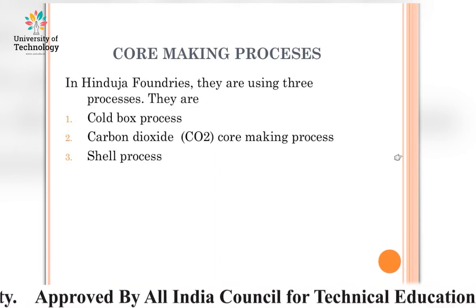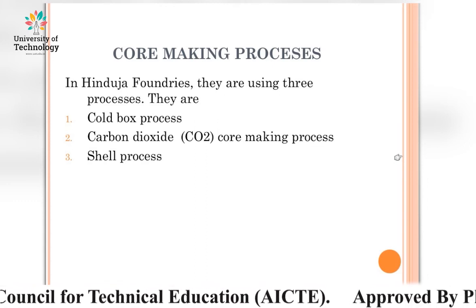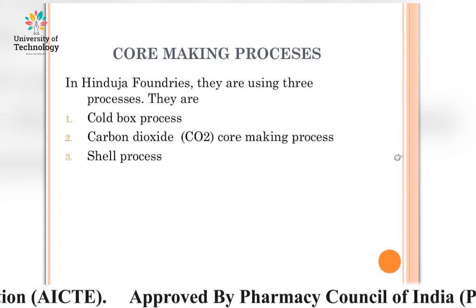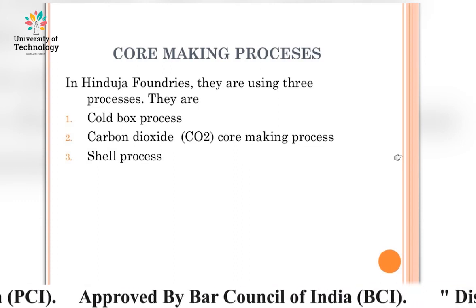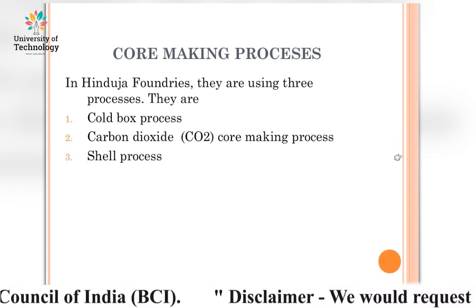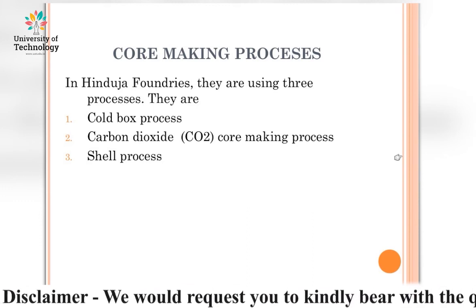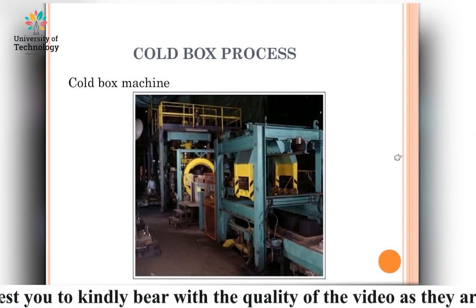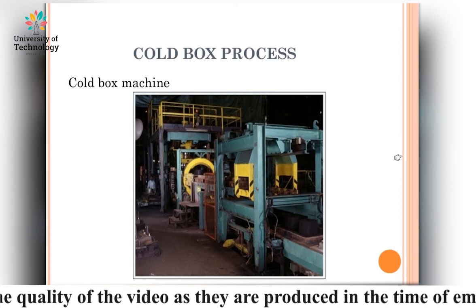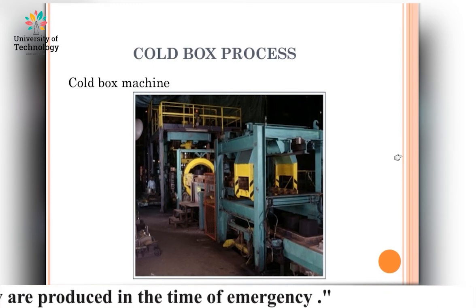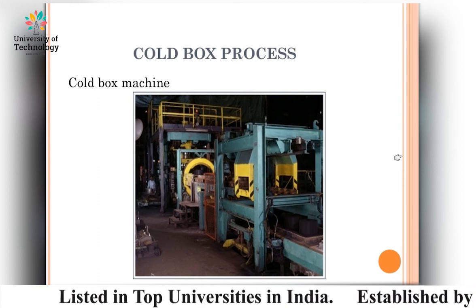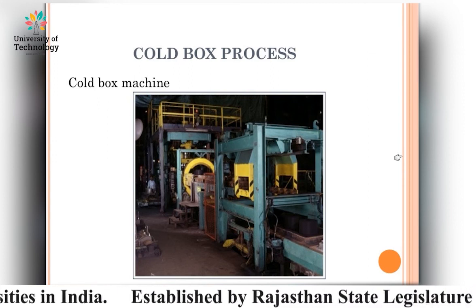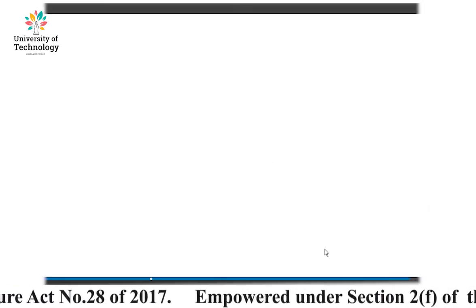For the core making process, we will look at a case study of Hinduja Foundries. They use three processes: the cold box process, the carbon dioxide core making process, and the shell process. In the slide, we can see the core box machines used at Hinduja large industries, clearly showing the core making machines.